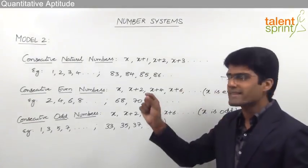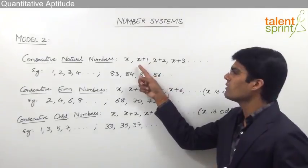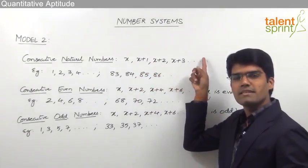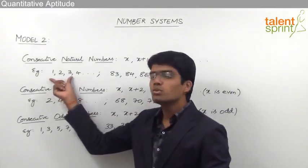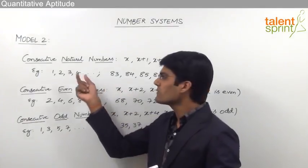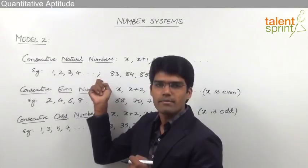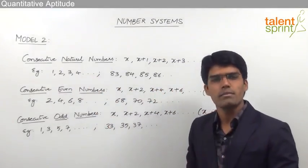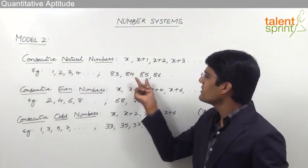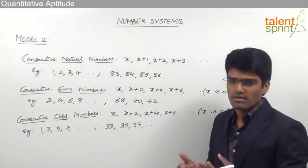If the first number is x, the second consecutive natural number would be x+1, then x+2, x+3, x+4 and so on. For example, 1, 2, 3, 4 are consecutive natural numbers — all in a row without any gap. These can also be called successive numbers. Similarly, 83, 84, 85, 86 are also consecutive natural numbers or successive numbers.